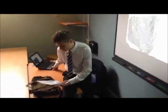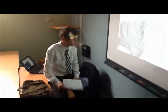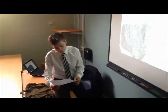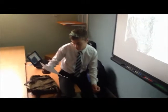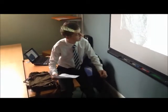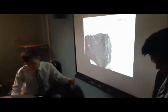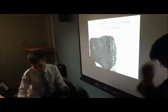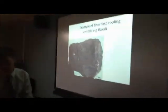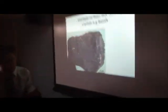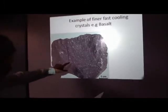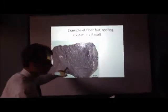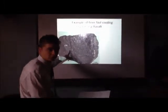Moving on to extrusive volcanic features. Magma in extrusive features cools, crystallises and solidifies from surface lavas. Lava on the surface cools far quicker than magma underground, and cooling in the sea is even more rapid. Resulting igneous rocks tend to be finer grained with small crystals — for example, basalt.